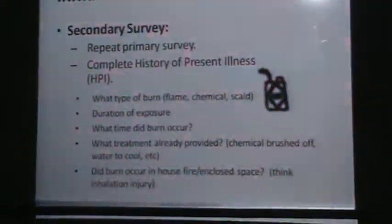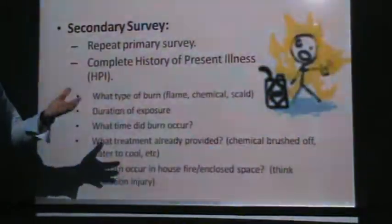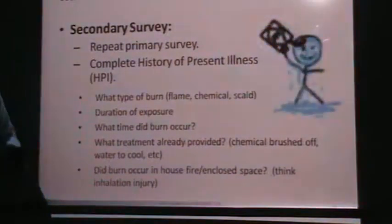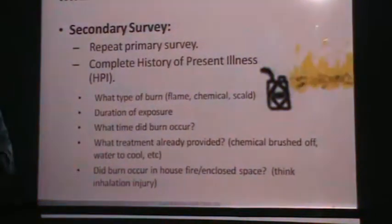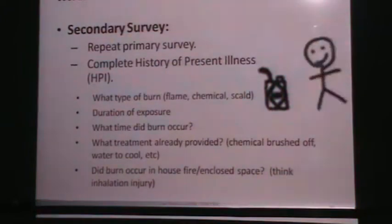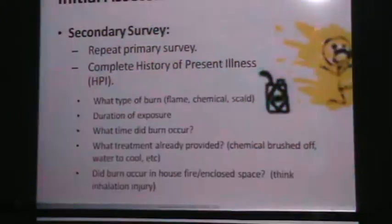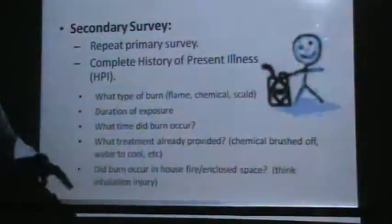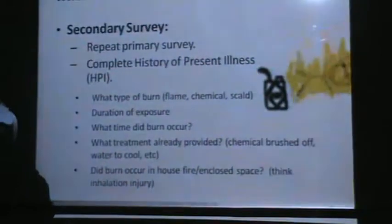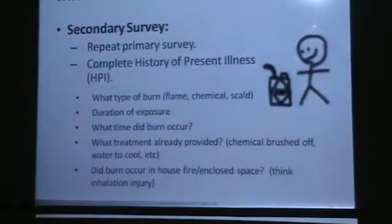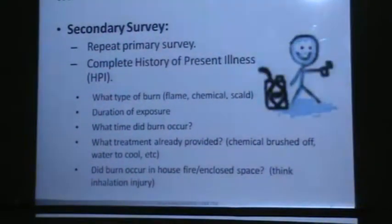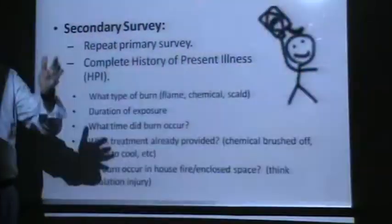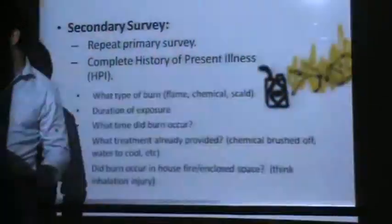We determine the type of burn: chemical, scalding, flames, or electrical. We also assess the duration of exposure — how long the person was exposed to the burning factor — and what treatment was already provided: was the chemical brushed off, was water applied? We also ask whether the burn happened inside an enclosed area with fume exposure or outdoors.